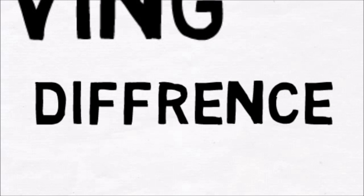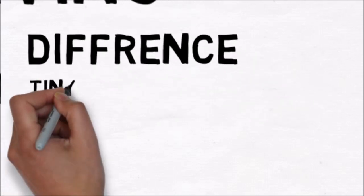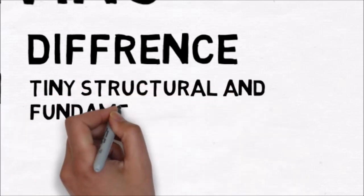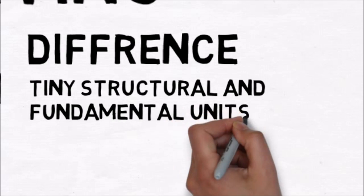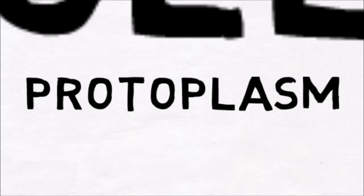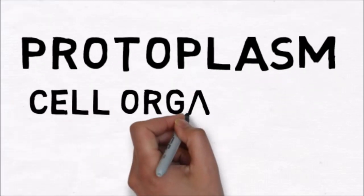There are certain features which make living things different from non-living ones. One of them is that all living objects are made up of tiny structural and fundamental units called cells. Cells are made up of protoplasm and cell organelles.